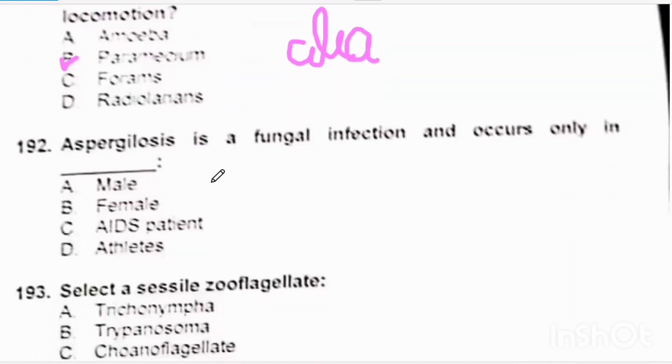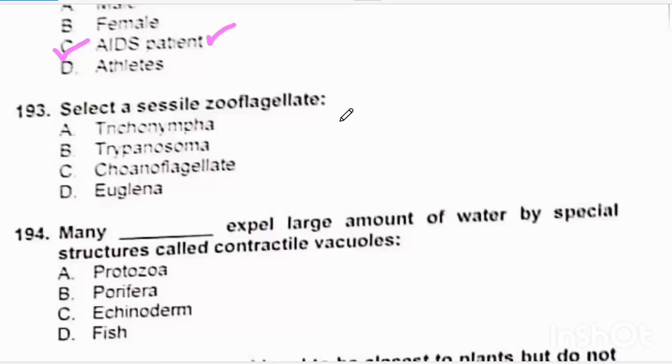Aspergillosis is a fungal infection and occurs only in AIDS patients. Select a sessile zooflagellate, that is choanofllagellate. A choanoflagellate is a sessile zooflagellate attached by a stalk. Correct option will be chardine.